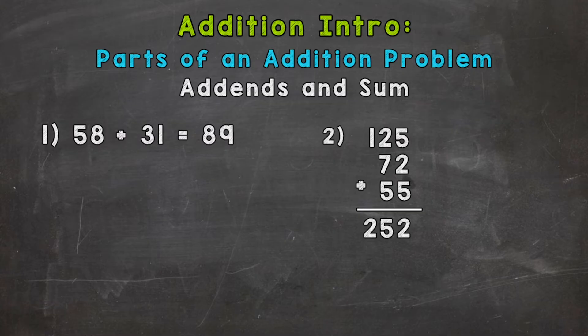We have two examples that we're going to go through together in order to see exactly what these words mean. So let's jump into number one here, where we have 58 plus 31 equals 89. The two numbers that we're adding together, this 58 and the 31, are our addends.